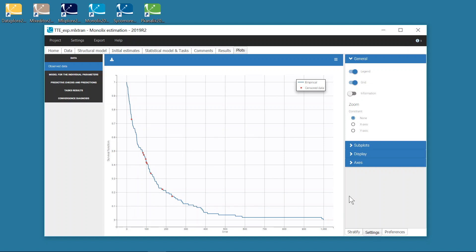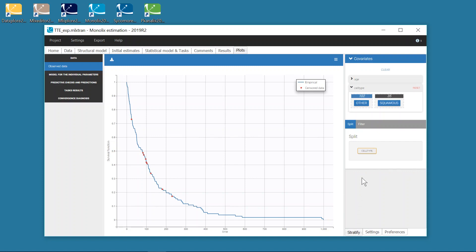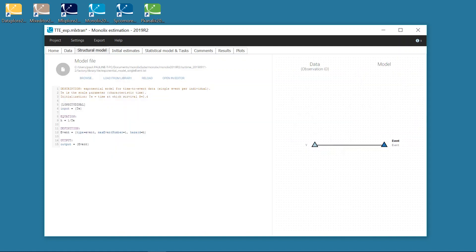It is possible to split this plot with the covariates, for example with cell type, which seems to have an effect on survival. Based on the shape of this Kaplan-Meier estimate, an exponential model was chosen from the time-to-event library in the tab Structural Model.